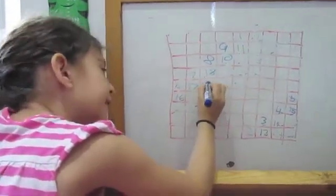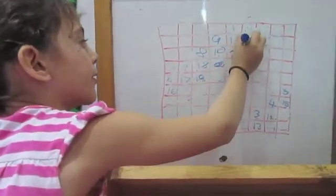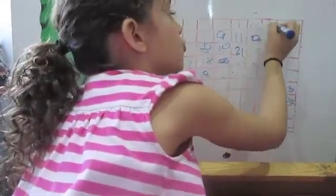So, it's nineteen. Twenty. Twenty-one. Twenty-two. Twenty-three.